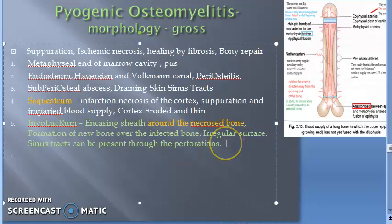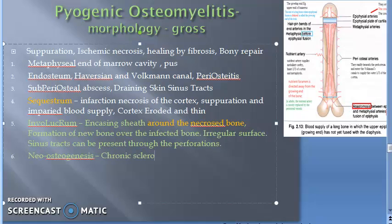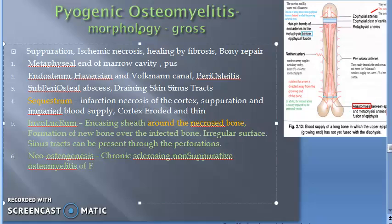So there will still be drainage of pus. With long continued neo-osteogenesis, there will be a dense sclerotic pattern of osteomyelitis called chronic sclerosing non-suppurative osteomyelitis of Garré.